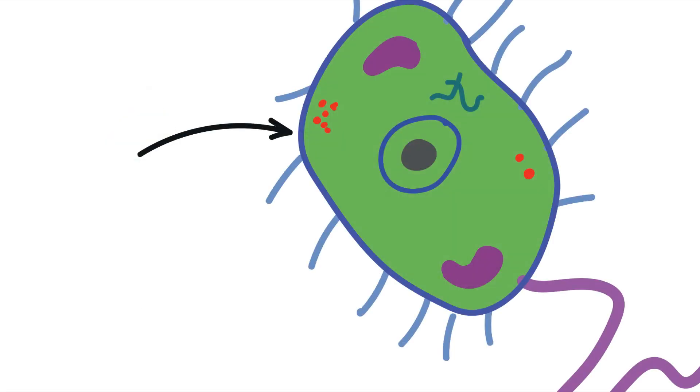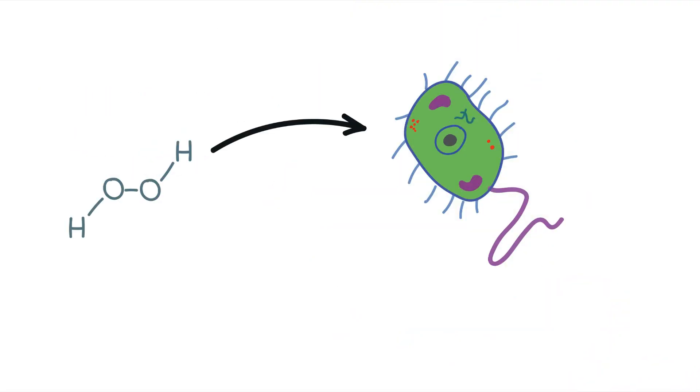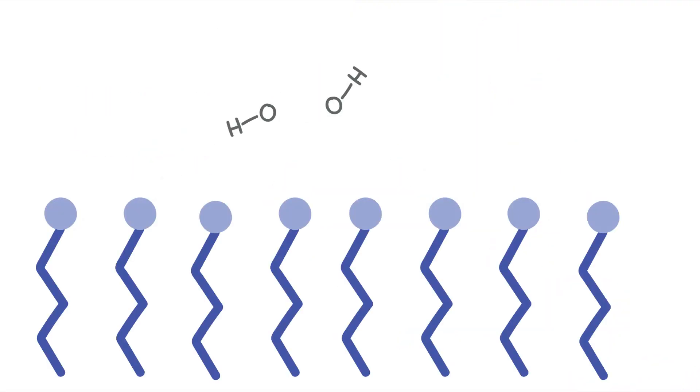Here's the bacterial membrane. It holds the bacteria together and keeps the cytoplasm and organelles safe. When the peroxide comes in contact with the membrane, it splits in half, making a very unstable molecule called a free radical. Because it's unstable, it needs to become stable very quickly. It pulls the hydrogen atom from one of the bacterial membrane lipids, but now the lipid contains a free radical. So it takes a hydrogen from a neighboring lipid, causing that lipid to form a free radical.